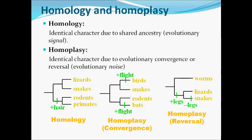Next is homoplasy reversal. In the ancestors of snakes and lizards, legs were present; however, snakes reversed this character and legs are no longer found in them. This is how reversal homoplasy is demonstrated. Thank you for this lecture — in the coming lectures we will study the concept of the evolutionary tree.